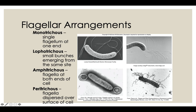Lophotrichous arrangements have bunches of flagella coming out of one spot. A monotrichous arrangement has one flagella from one spot; lophotrichous has multiple flagella from one spot. You can see here a spiral-shaped bacteria called a spirillum with a lophotrichous arrangement — bunches of flagella coming out of one spot on the organism.